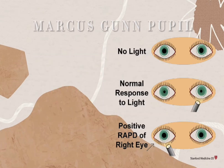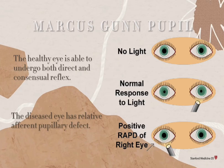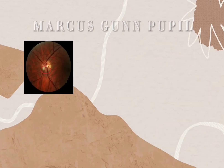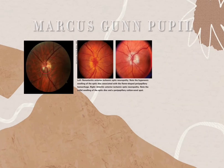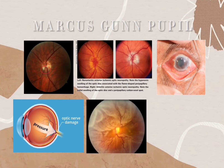This explains why the healthy eye undergoes both direct and consensual dilation seen on the swinging flashlight test while the diseased eye could not. Some causes of RAPD include optic neuritis, ischemic optic disease or retinal disease, severe glaucoma, direct optic nerve damage, retinal detachment, and retinal infection.